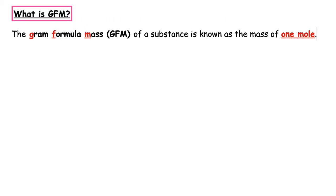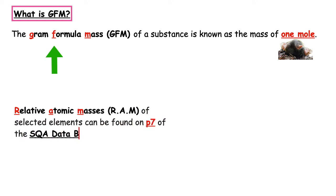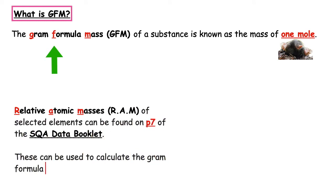The gram formula mass of a substance is known as the mass of one mole — not the mole found in the ground, but meaning one of that particular substance that we look at when we work out the formula. The relative atomic mass of selected elements can be found on page 7 of the National 5 SQA data booklet, and these can be used to calculate the gram formula mass of a substance.